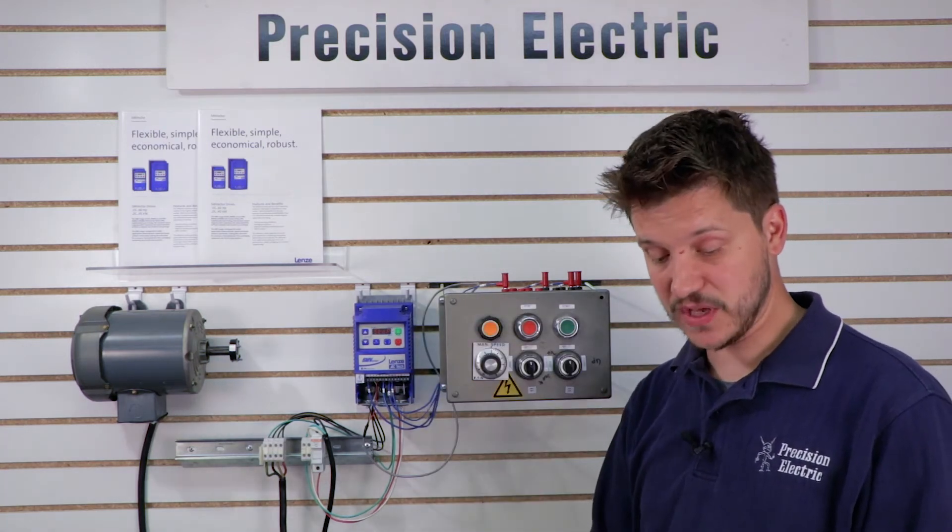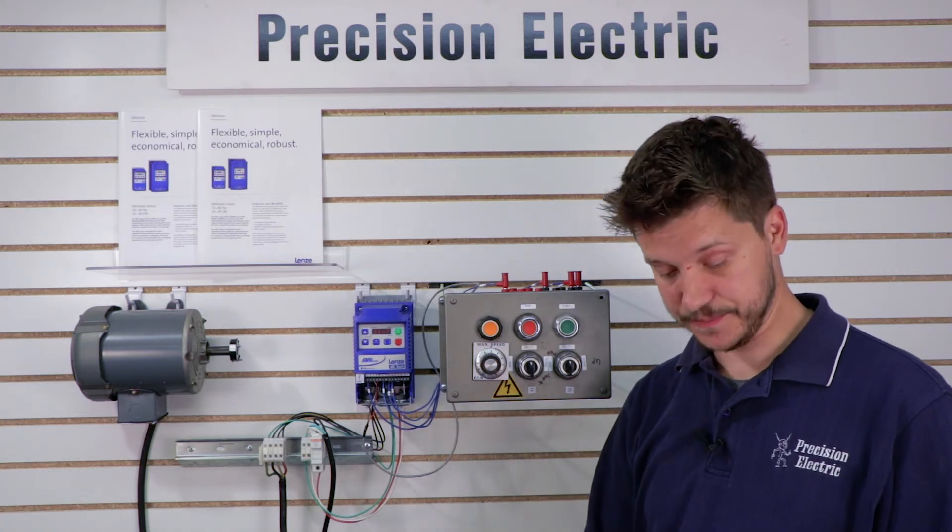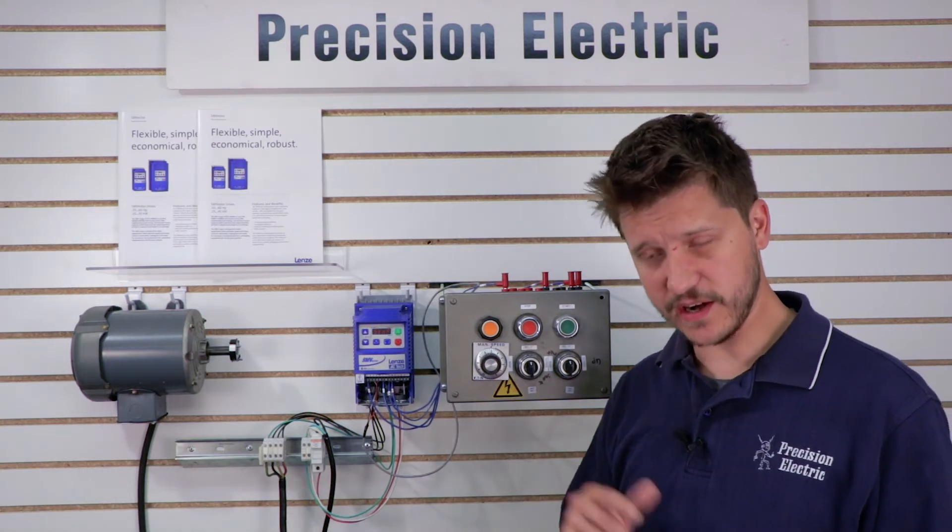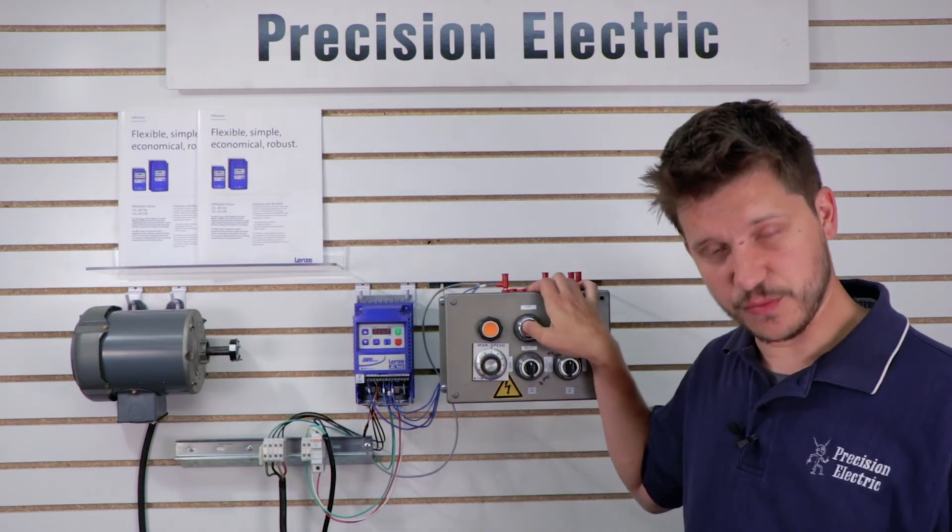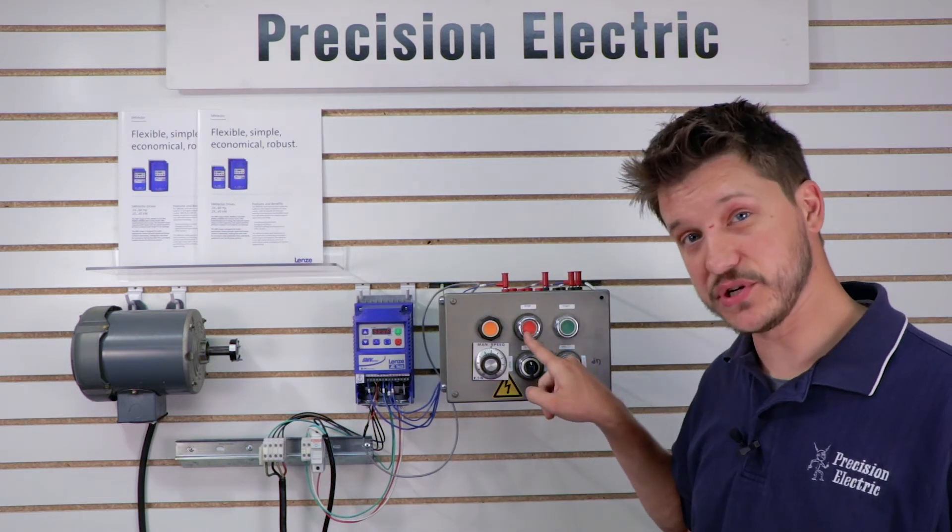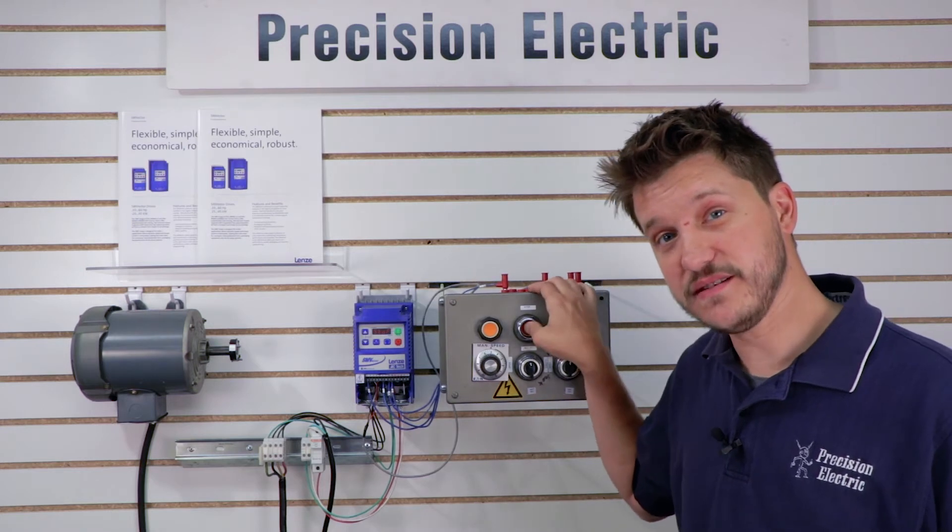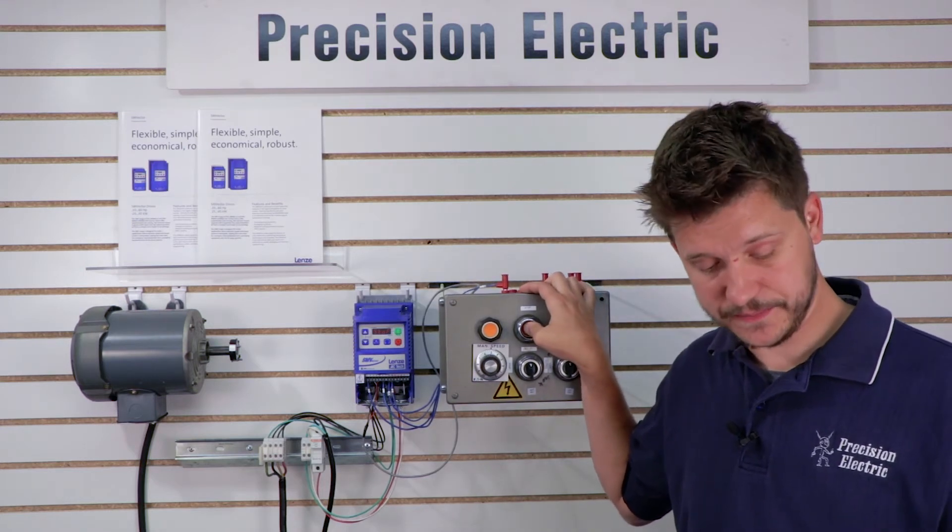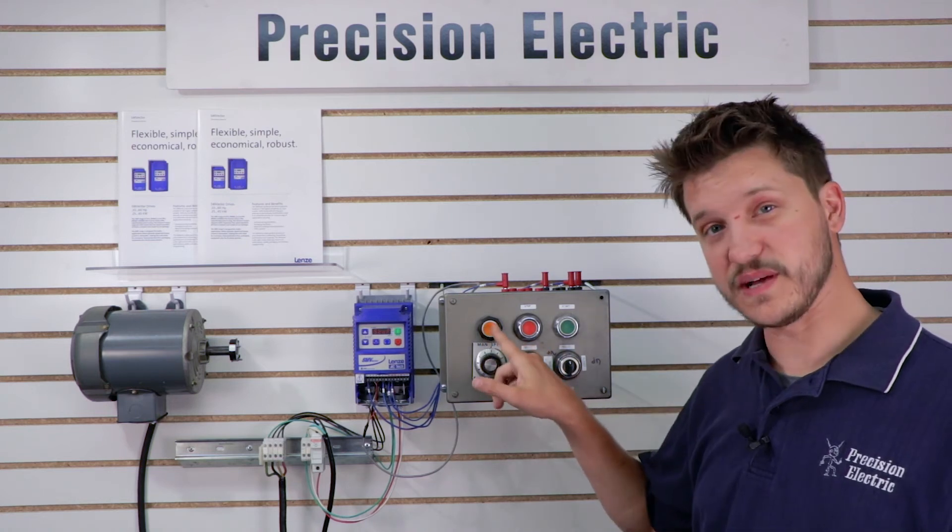For the first one, we're going to use the middle print, which is a start-forward, start-reverse wiring diagram, and it shows that we wire our stop button, which in this case is this button, through a normally closed contact, which means that when the button's like this, not pushed in, electricity flows through it, and when I push it in, electricity stops flowing through it.